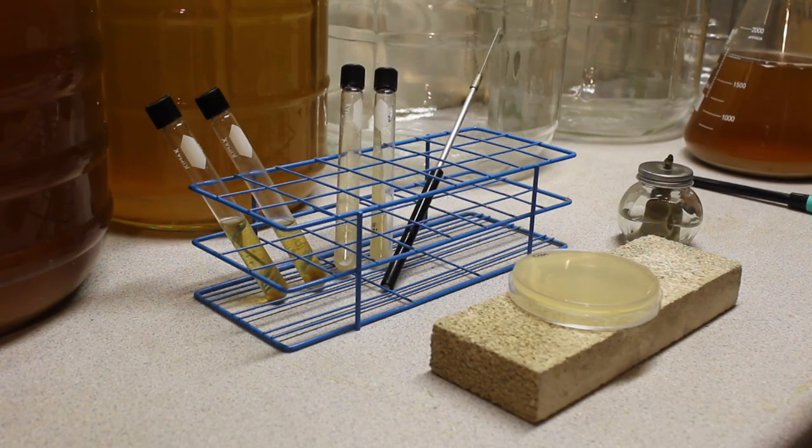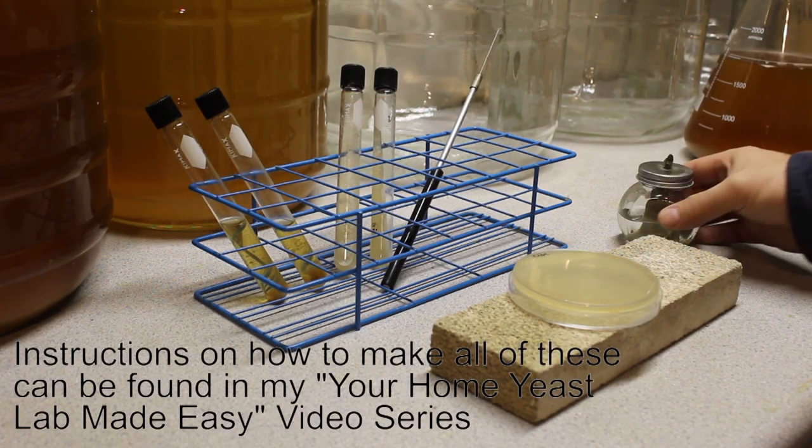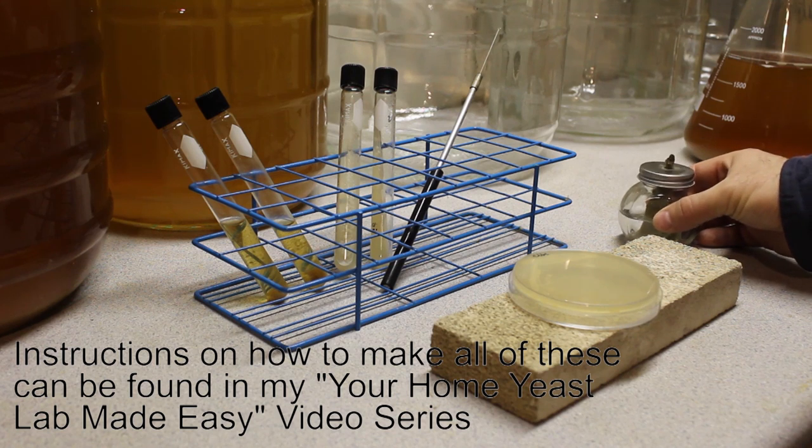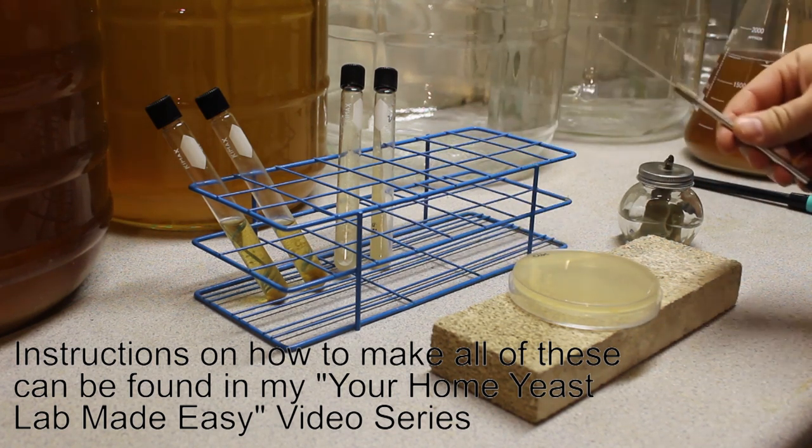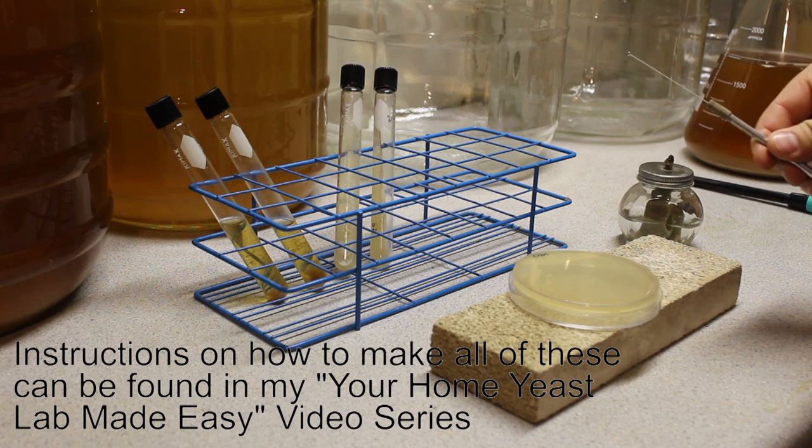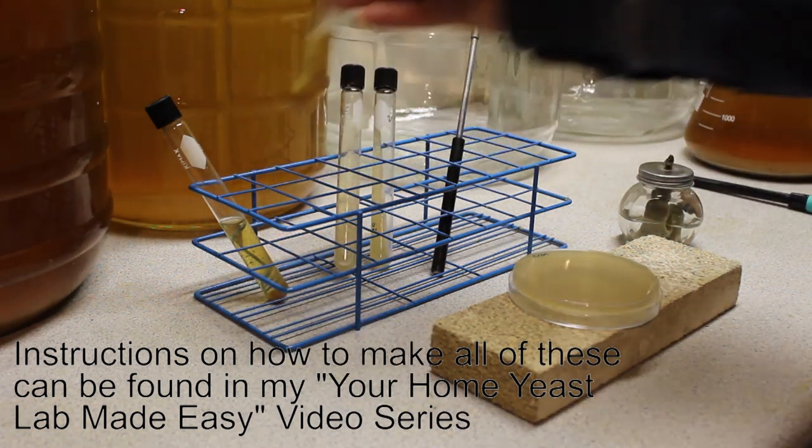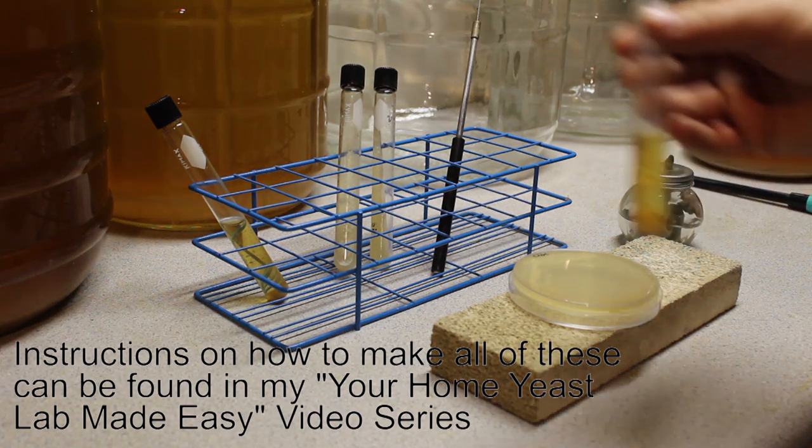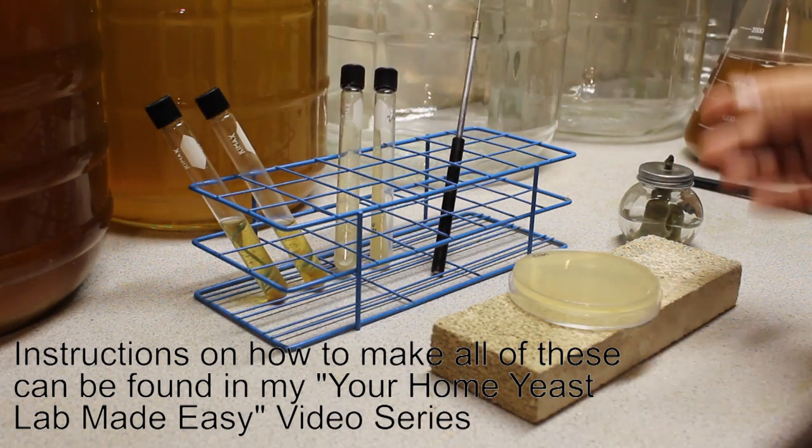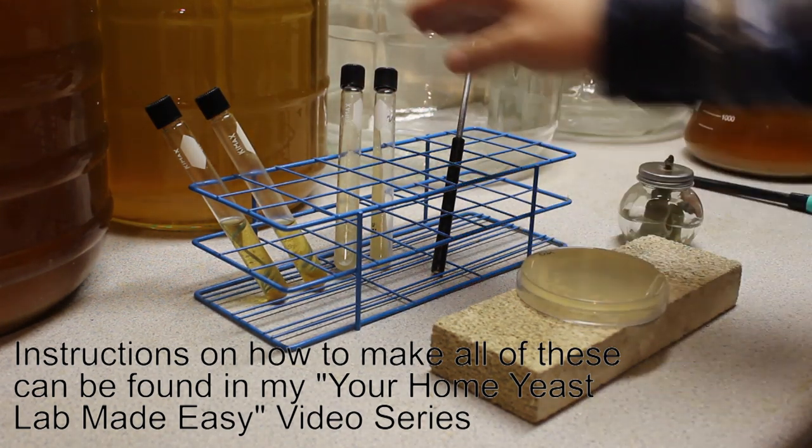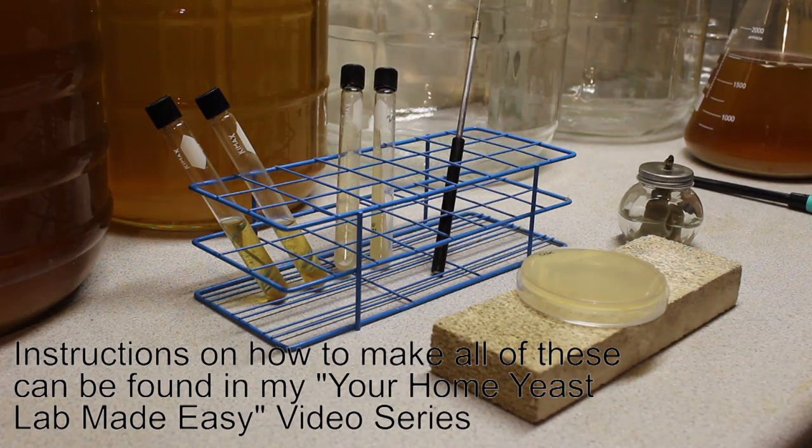For this procedure you're going to need a few items. You're going to need a Bunsen burner or alcohol lamp. You're going to need a bacteriological loop or a paper clip bent into a ring. You're going to need some tubes of starter wort that's sterile, and you're going to need a source of yeast, either an agar plate or some agar slants.